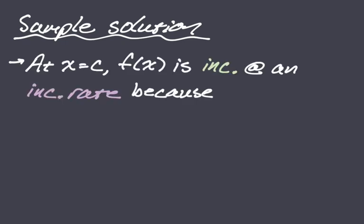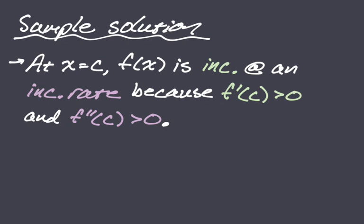Sample solution number one: at x equals c, f of x is increasing at an increasing rate. The first thing we want to justify is that f of x is increasing — that's about f prime, so f prime must be greater than zero. At an increasing rate refers to what's happening to f prime. If f prime is increasing, that means f double prime is positive. So: increasing at an increasing rate means f prime greater than zero and f double prime greater than zero.